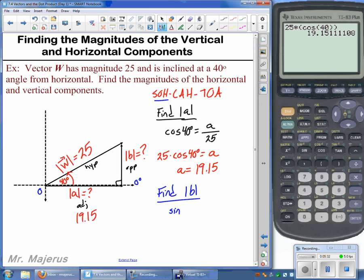So we could write the sine function, sine of 40 degrees is equal to B over 25. The algebra here is pretty much the same. 25 times the sine of 40 degrees should equal or give us B then.